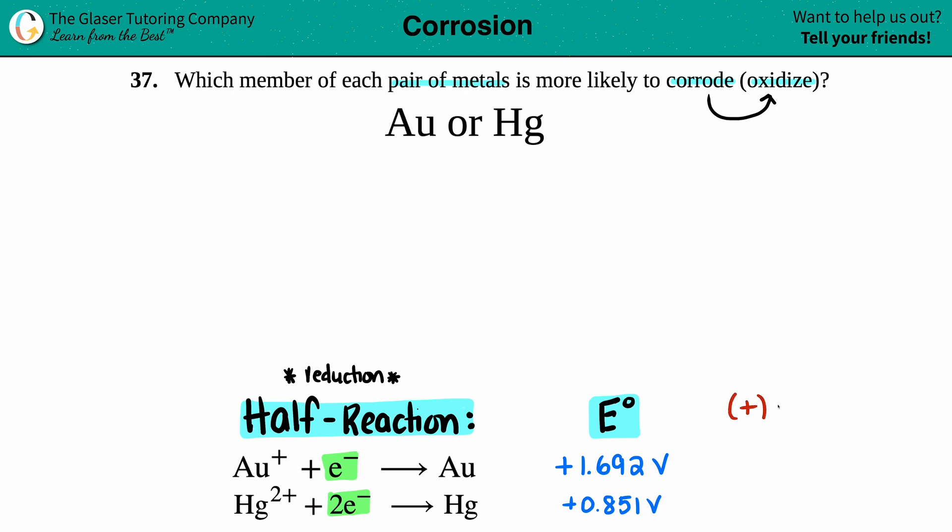the more reduced or the more chance that that metal or that substance is going to be reduced. So the higher the value is going to be reduced.